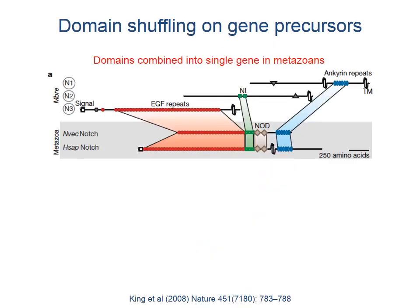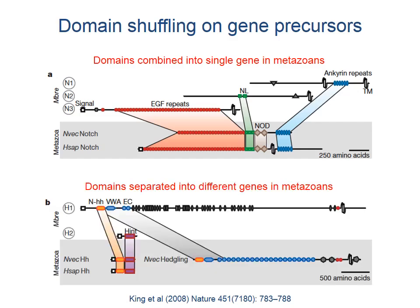While many animal genes are present in Monosiga brevicollis, some appear to be under construction. Parts of the Notch gene, involved in cell-cell signaling, are found as three separate genes in Monosiga brevicollis. Parts of the animal Hedgehog gene, involved in developmental signaling, are found as segments of a larger gene in the choanoflagellate. This suggests that genetic experimentation through mixing and matching of gene domains occurred on the lineage leading to animals.